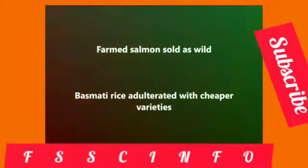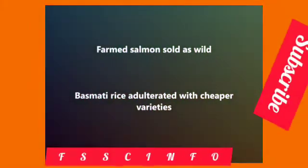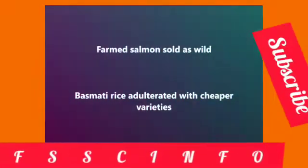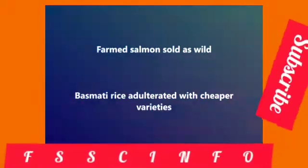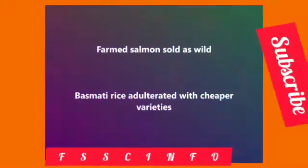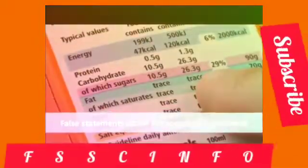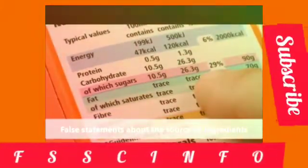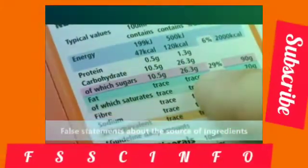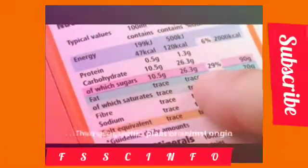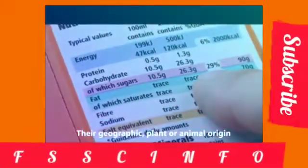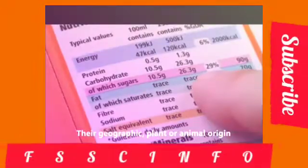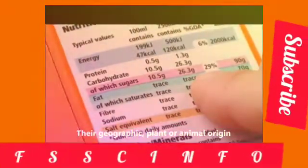Examples of mislabeling include farmed salmon sold as wild, or basmati rice adulterated with cheaper varieties. Also included are false statements about the source of ingredients, such as their geographic, plant, or animal origin.